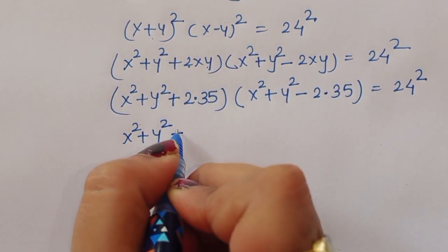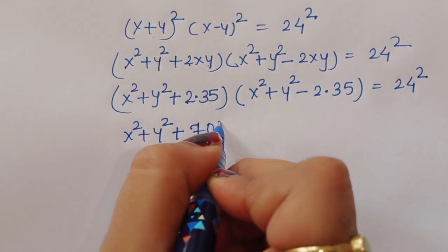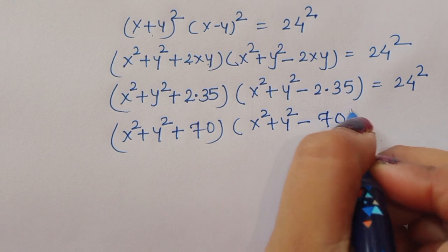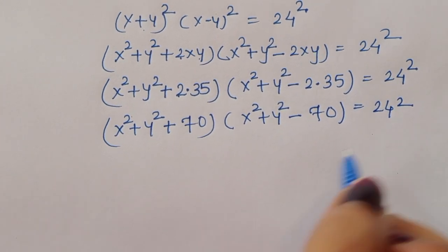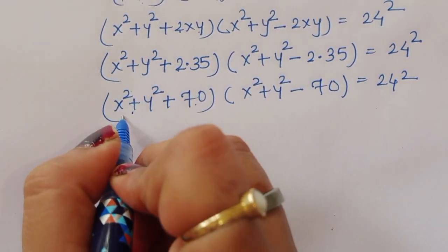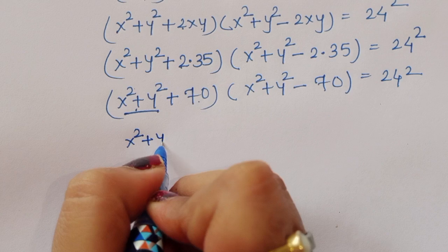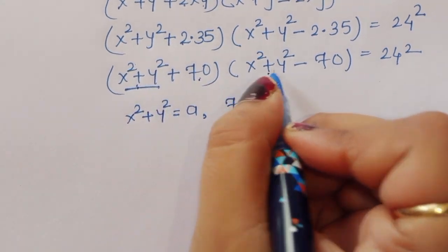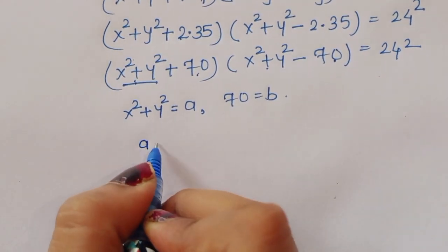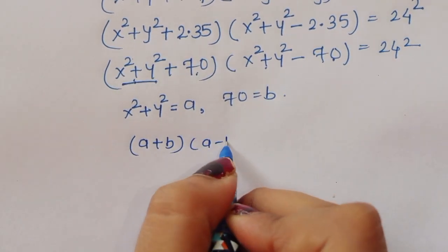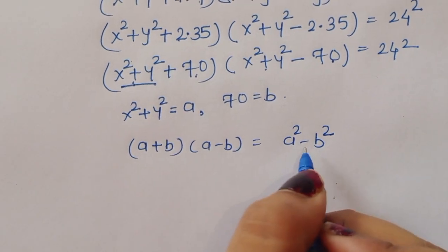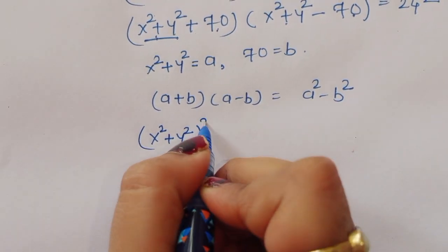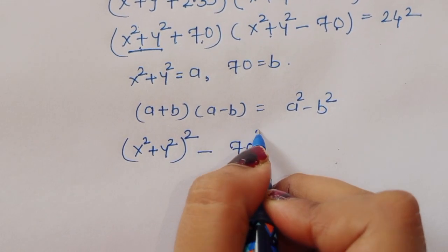So we have x squared plus y squared plus 70, times x squared plus y squared minus 70, equals 24 squared. If we consider x squared plus y squared equal to a, and 70 equal to b, this is the form a plus b times a minus b, which equals a squared minus b squared.